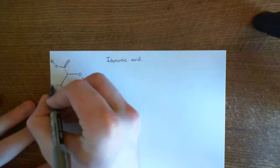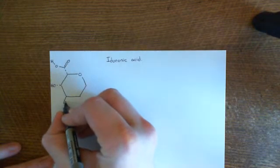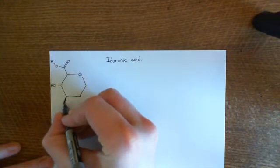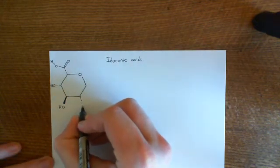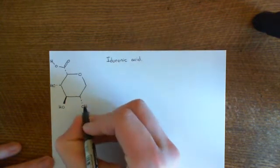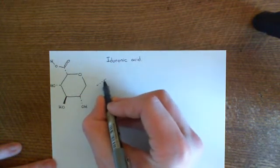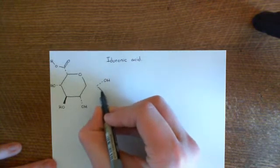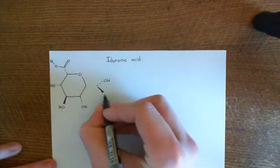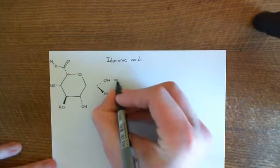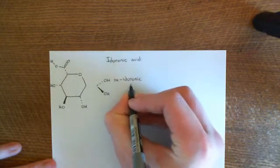You'll have this alcohol group going into the page away from us, and the alcohol group of the third carbon of glucose coming out of the page at us. Then you'll have an alcohol group of the second carbon of this ring going into the page away from us. As far as this position is concerned, if it's going into the page away from us that's the alpha isomer of iduronic acid, and if it's coming out of the page at us that's the beta isomer of iduronic acid.